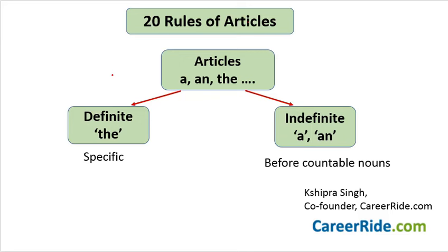Whenever we talk about articles in English grammar, we use three articles: A, An, and The. 'The' is the definite article — whenever we are talking about something very specifically, we use 'the'. On the other hand, A and An are called indefinite articles. Whenever we are talking about something not very specifically, we use these articles. A and An are used before countable nouns which are singular.